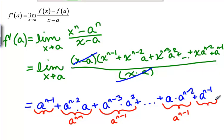So it turns out that every term here is going to be A to the N minus 1. So now we have to count and figure out how many of these we have.